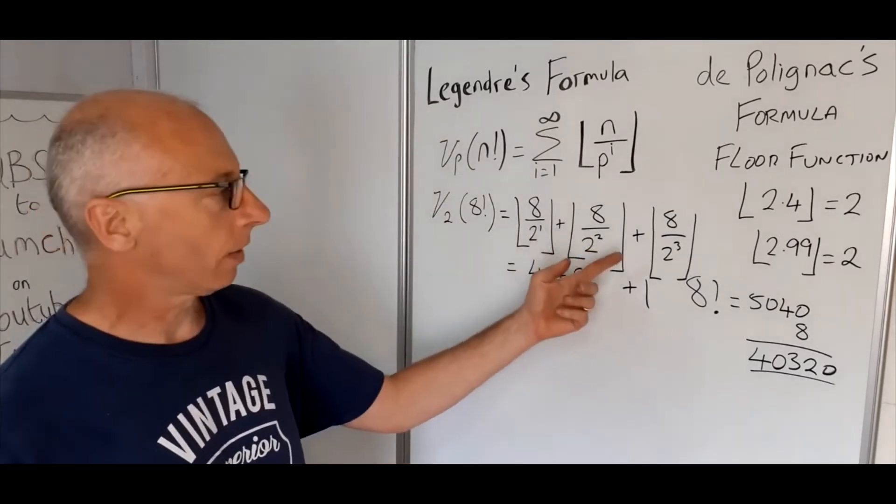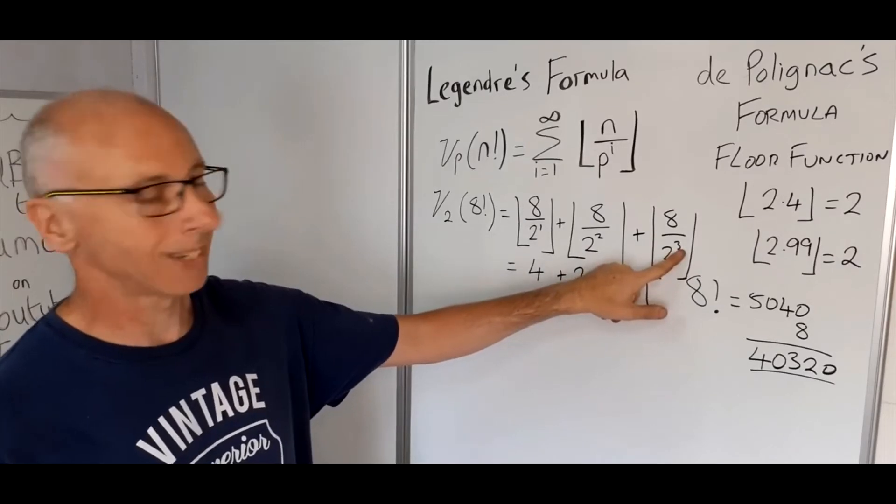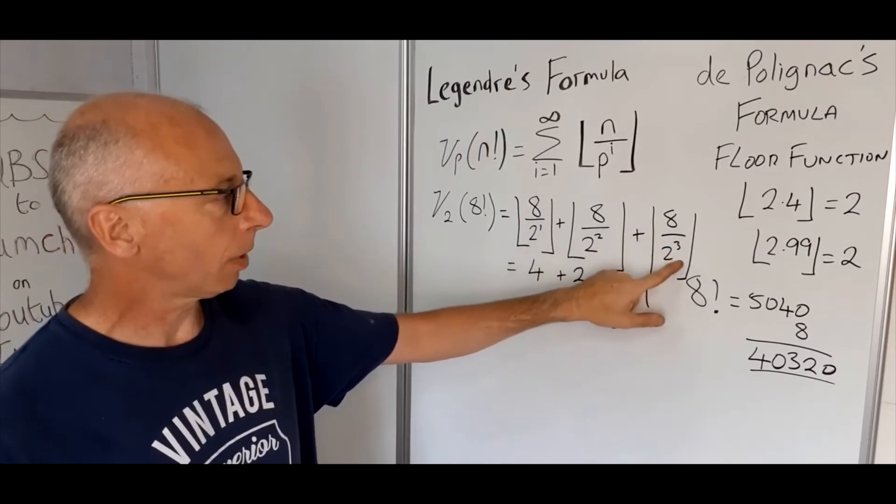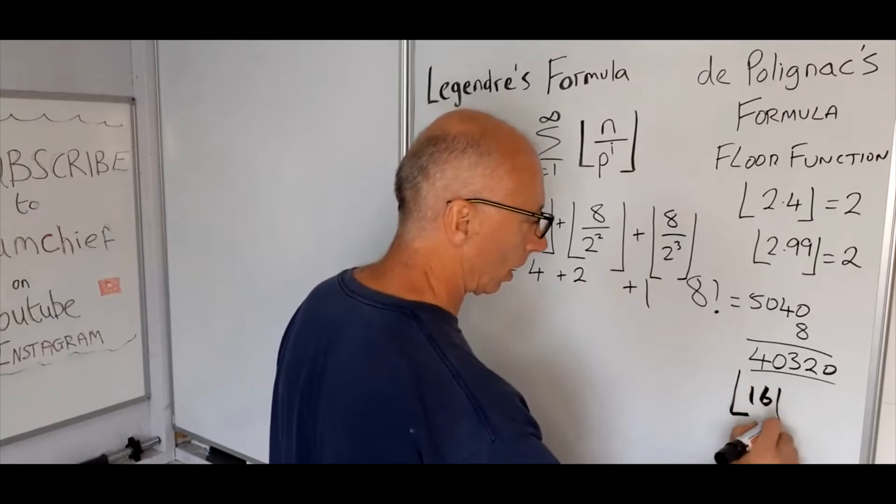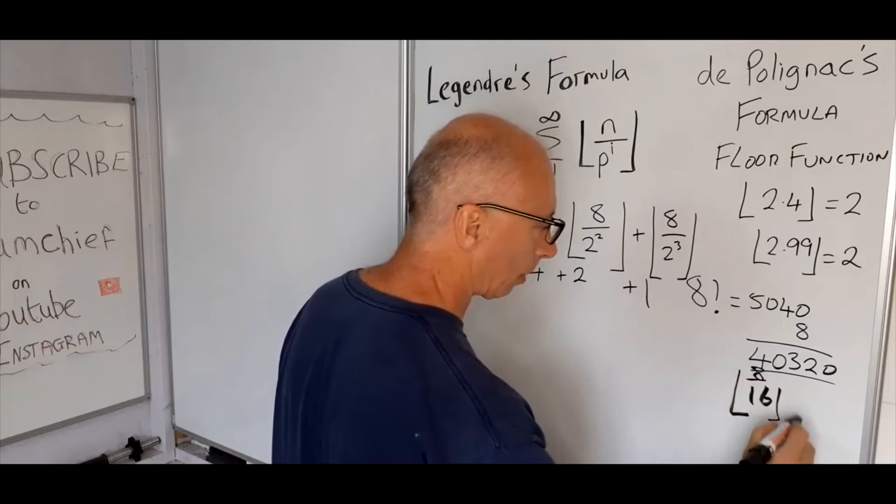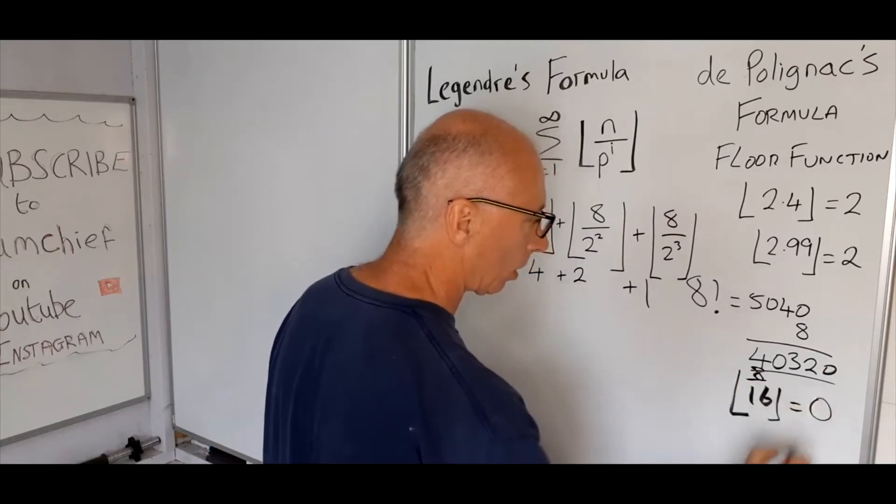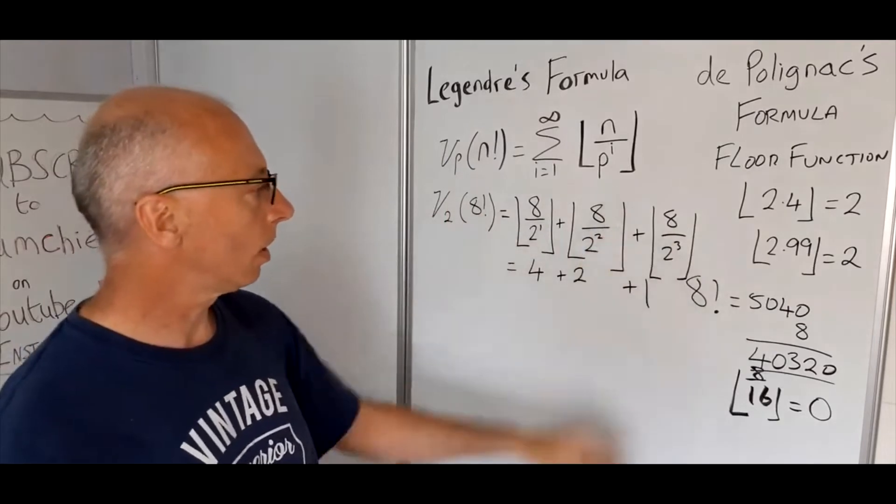So now we've got 8 over 2 to the power of 3. 8 divided by 8 is going to be 1, so the floor of 1 is just 1. Okay, now do we need to go any further? Well, just to see that, 2 to the power of 4 is 16, 8 divided by 16, the floor of 8 divided by 16 equals 0. So all the rest of these numbers are going to be 0, so we don't need to continue anymore.